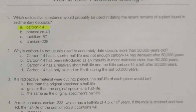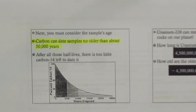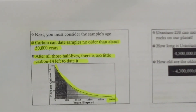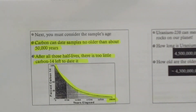Number two: why is carbon-14 not usually used to accurately date objects more than 50,000 years old? Carbon can date samples no older than about 50,000 years. After all those half-lives, there is too little carbon-14 left to date it. The graph shows that after 28,650 years, the amount of carbon-14 has been reduced to a very small amount. By the time you get to 50,000 years, the amount of carbon-14 is too little to detect.